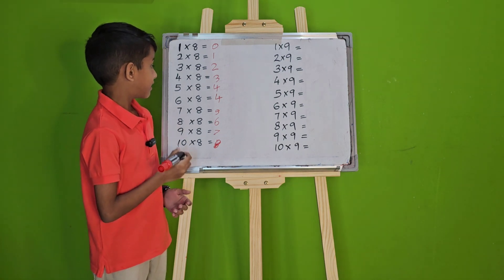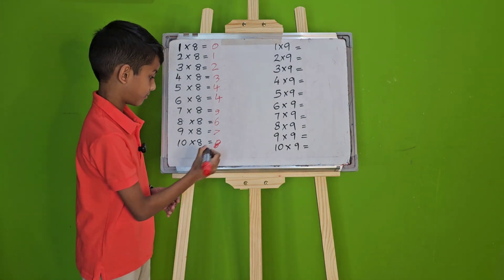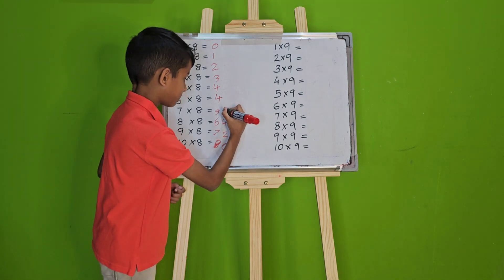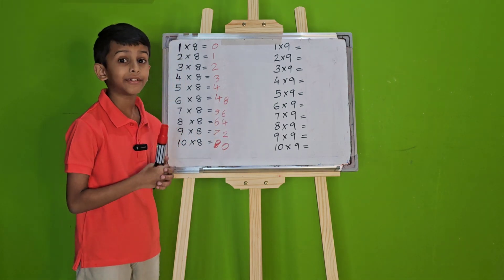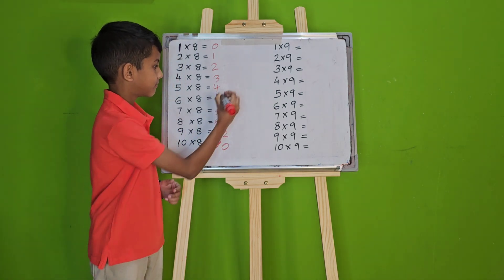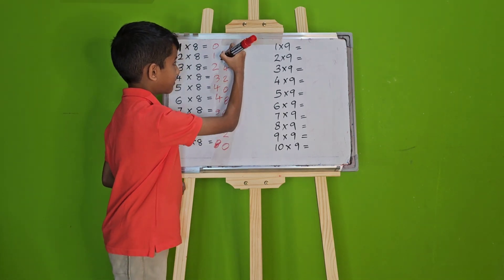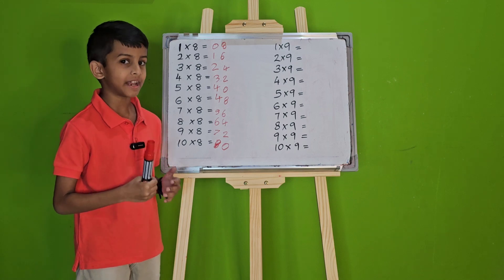Now, from 10 to 6, write even numbers starting from 0. Now, from 5 to 1, write the same even numbers again. And now, our 8 times table is ready.